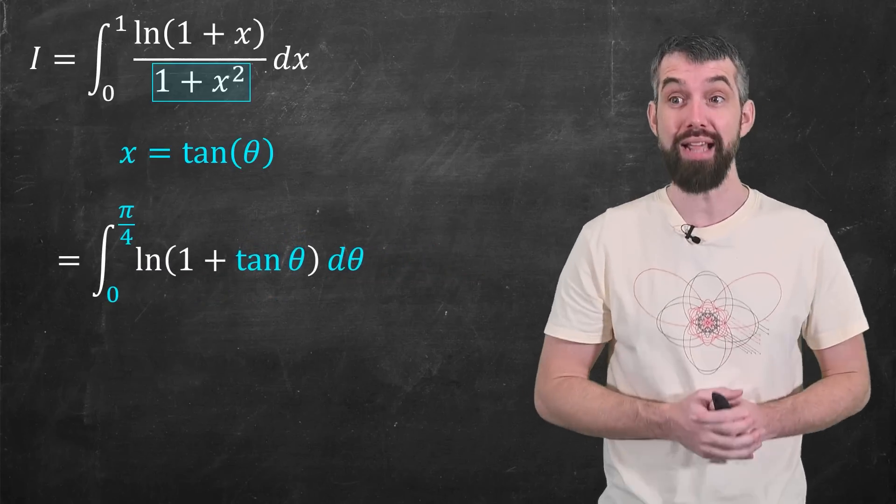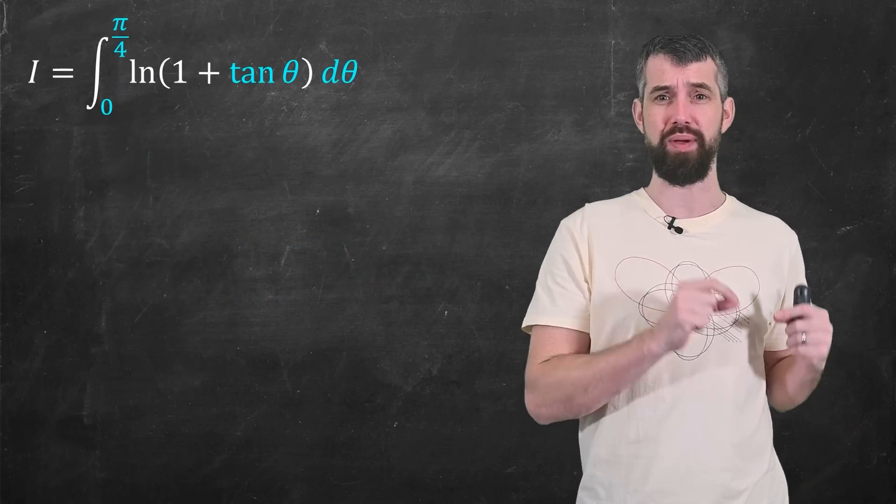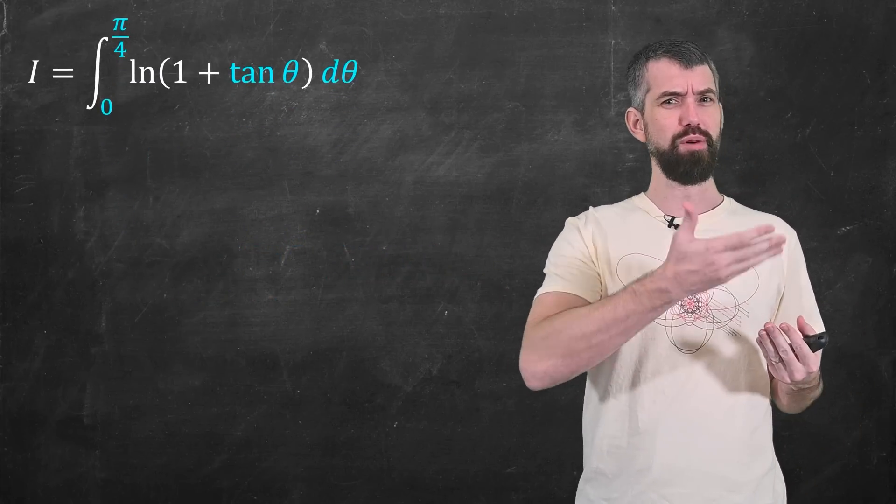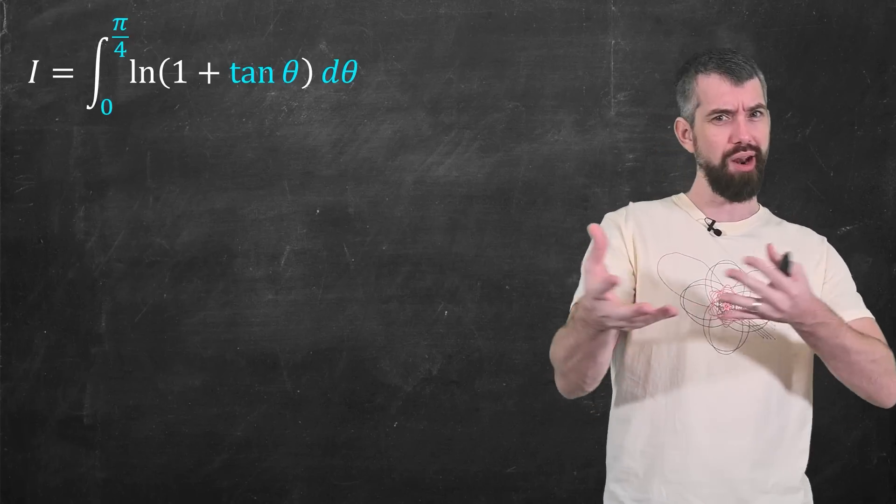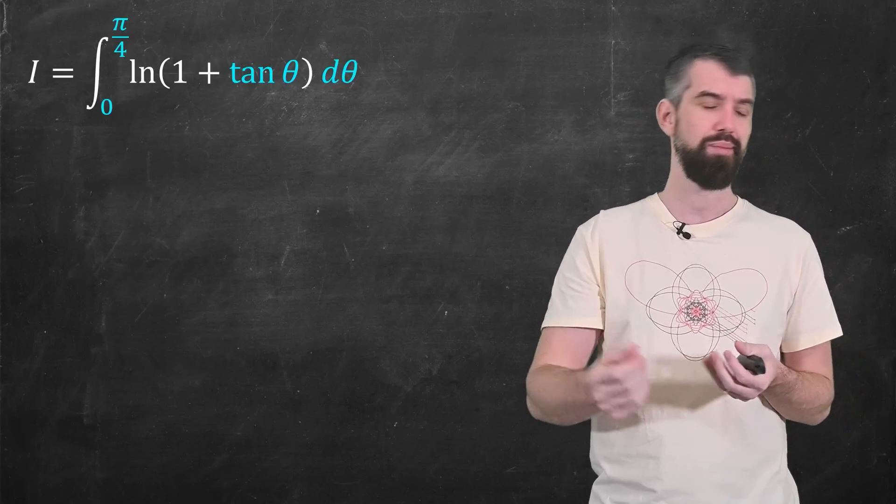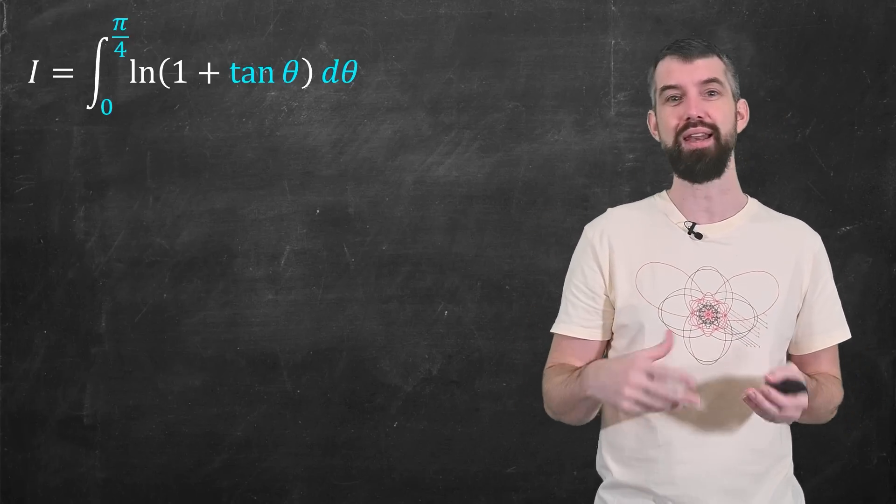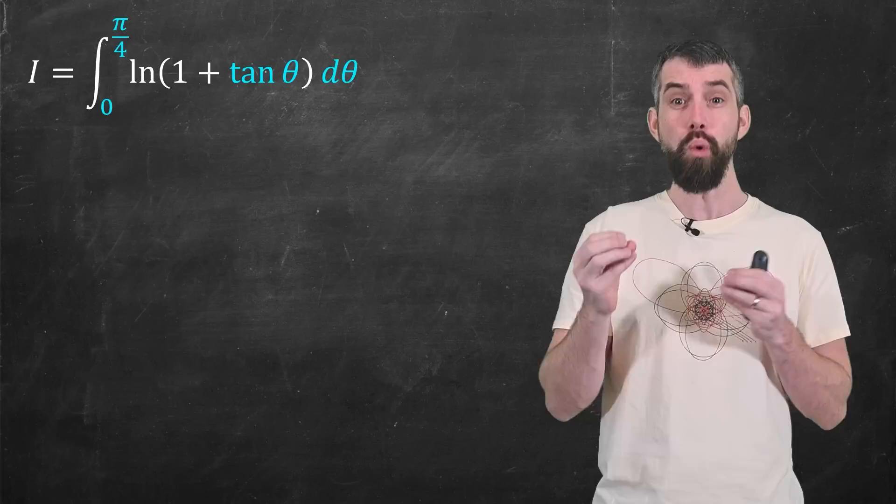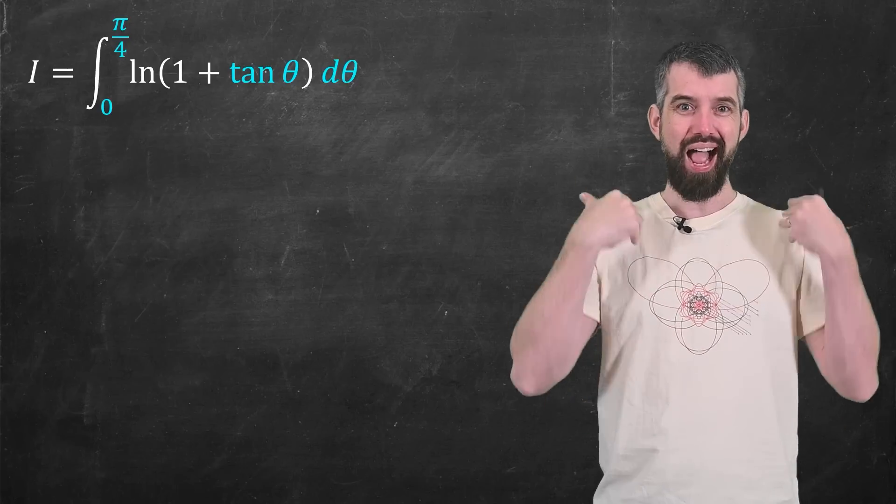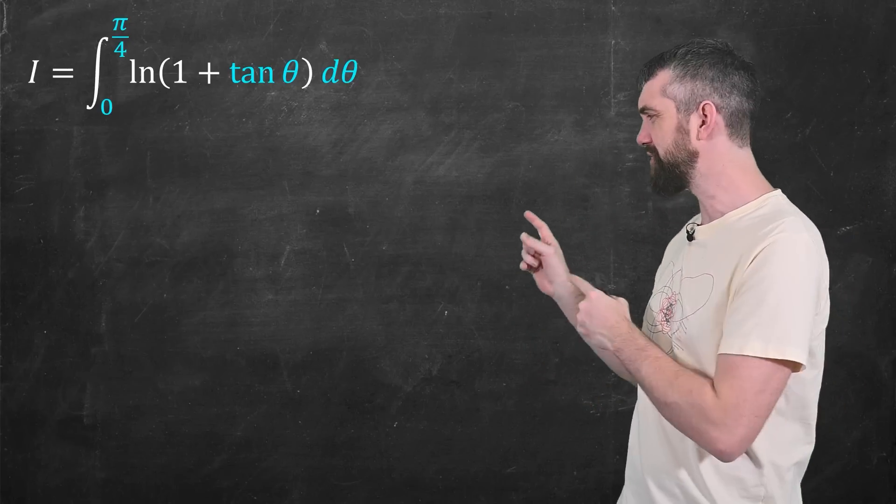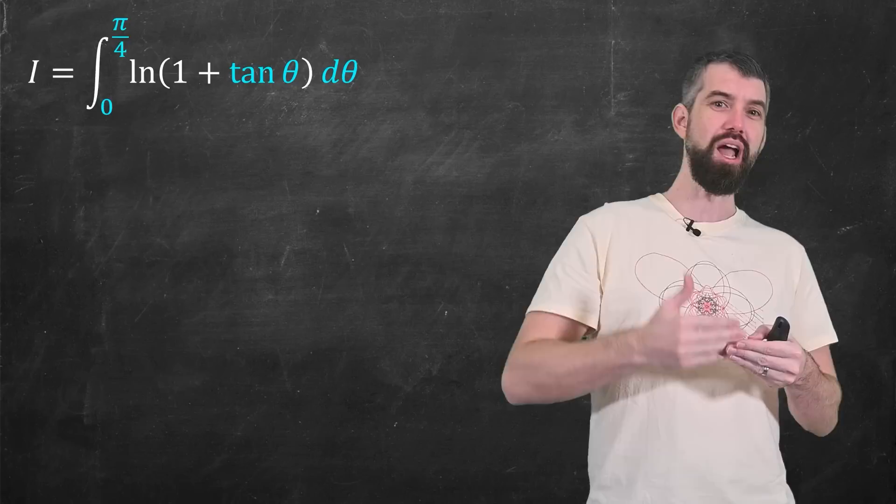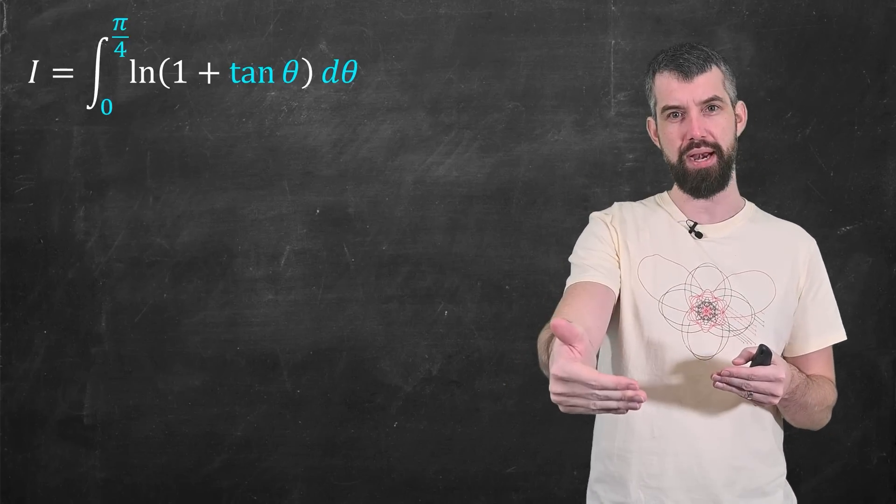So you might have tried this and you get to here, but then get a little bit stuck. Because logarithm of 1 plus tangent of theta, it's not obvious how we can manipulate it. Maybe I can make it sine over cos instead, that'd be fine. But it's not quite clear what to do. I know that I would like to use a trig identity somehow to clean this up. But I can't quite introduce a trig identity yet.